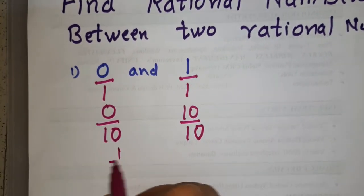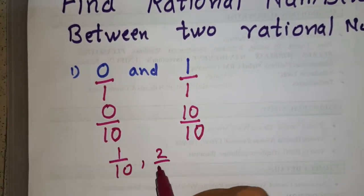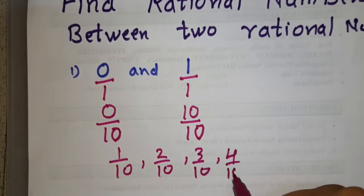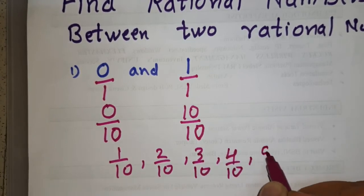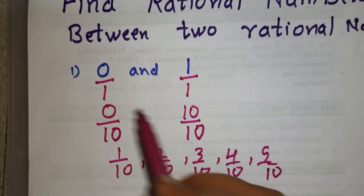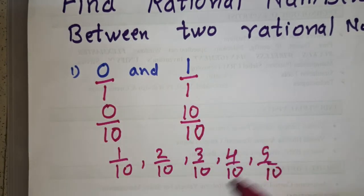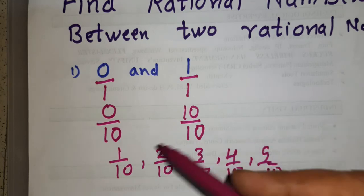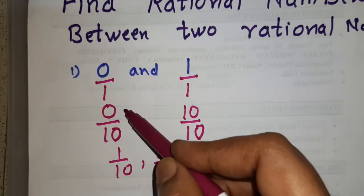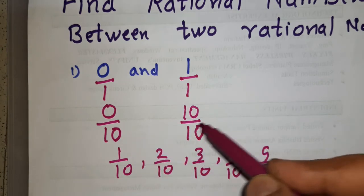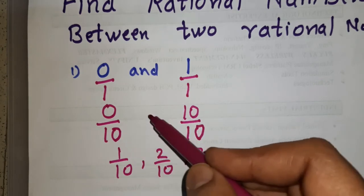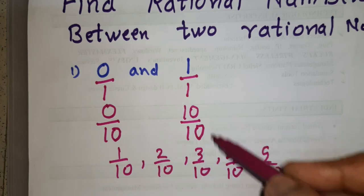Now we can find many rational numbers between them: 1 upon 10, 2 upon 10, 3 upon 10, 4 upon 10, 5 upon 10, going on until 9 upon 10 — these are the rational numbers between 0 and 1. If we need to find still more rational numbers, we simply increase the denominator by multiplying further, for example by 10 again, to get 0 upon 100 and 100 upon 100.